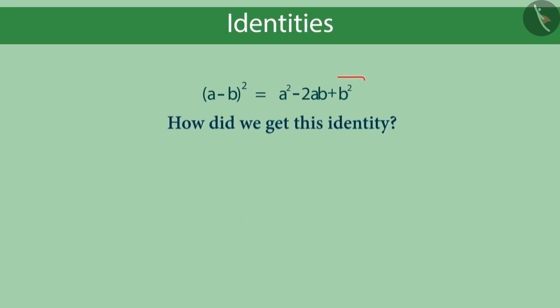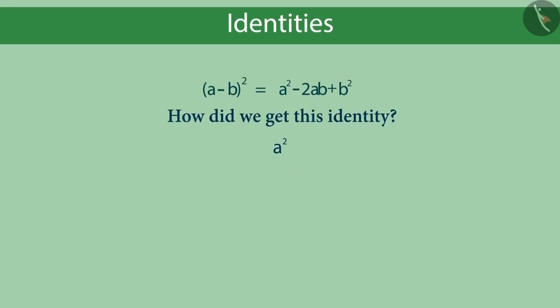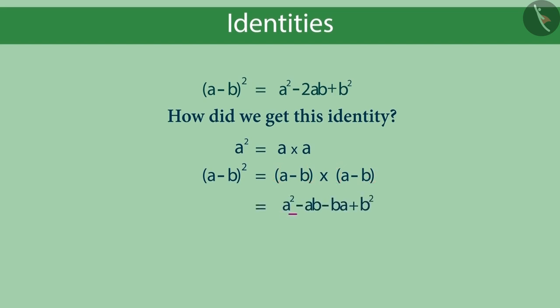We know what a raised to the power of 2 is — it is a multiplied by a. Similarly, a minus b raised to the power of 2 will be equal to a minus b multiplied by a minus b. Removing the brackets on the right-hand side, we get a² minus ab minus ba plus b².